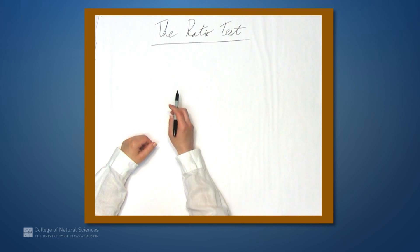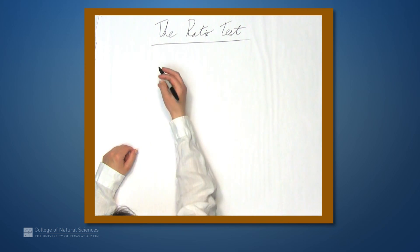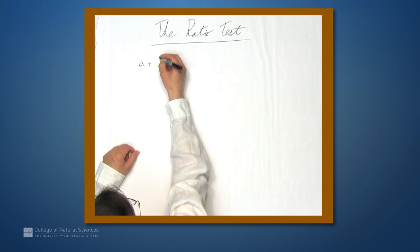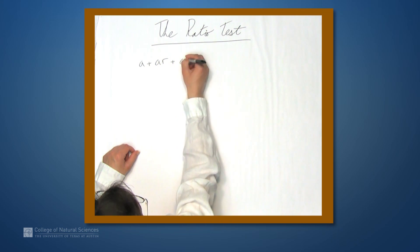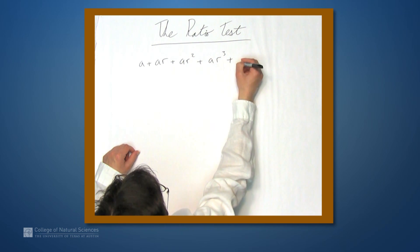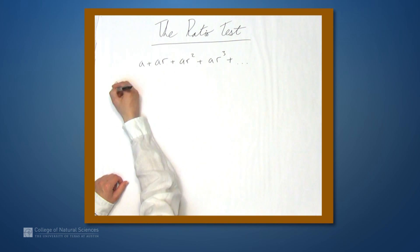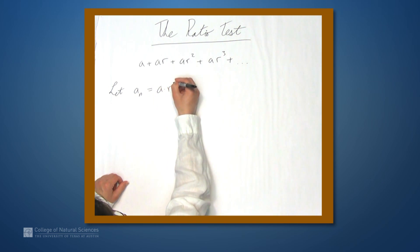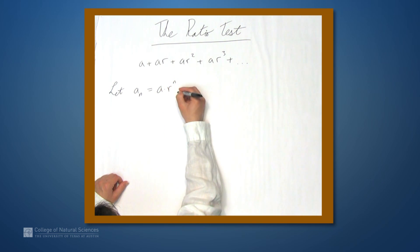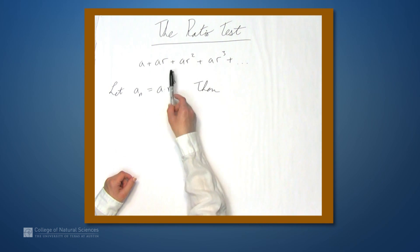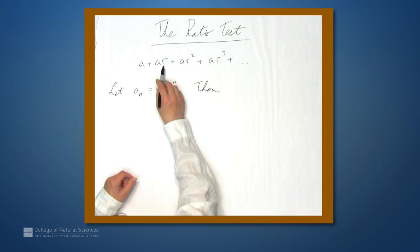We're here at the example table, and in this video we're going to be talking about the ratio test. Before we do that, let's go back to geometric series. A geometric series is something of the form a plus a times r plus a times r squared plus a times r cubed and so on. If we let a sub n equal a times r to the n, then we already know that the convergence of a geometric series is determined entirely by the value of r.